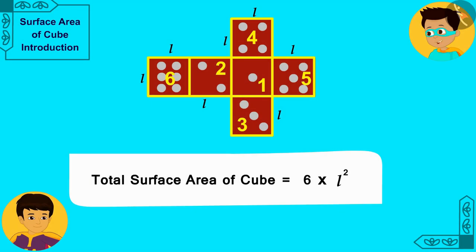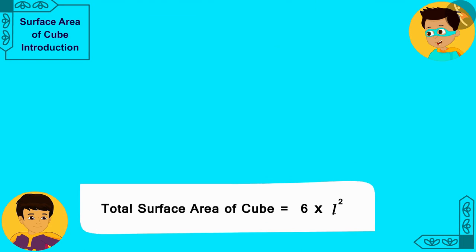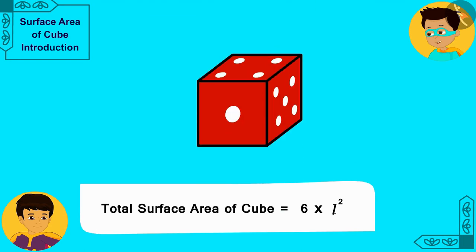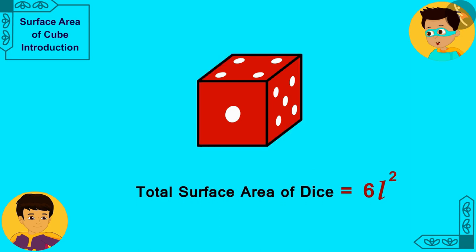Wow! Manas! We found the formula for the total surface area of a cube. Now, let us quickly measure the length of the side of this dice and write it in this formula. Then, we will know the total surface area of this cube.